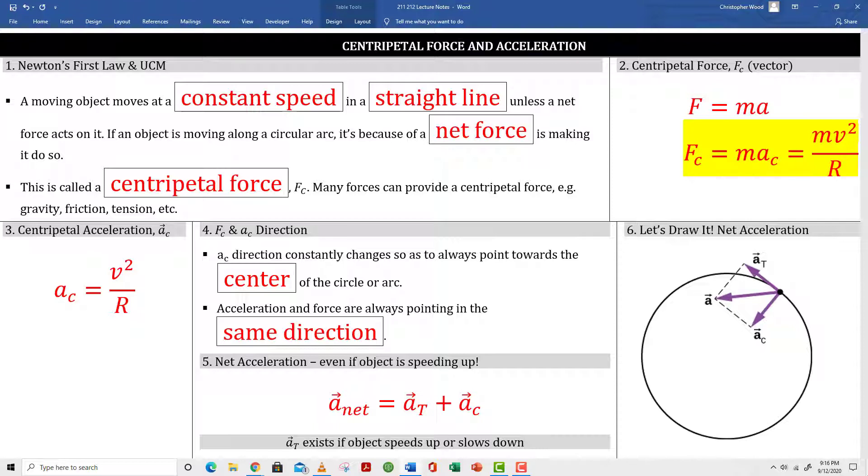Box number 4, the centripetal acceleration is a vector, so you have to worry about magnitude and direction, and its direction is constantly changing. As the object moves in a circle, its centripetal acceleration vector is constantly moving, so it always is pointing towards the center of the circle or the arc. As mentioned before, with Newton's second law, the direction of the acceleration vector and the force vector are always the same. That's useful to keep in mind. Box number 5 is saying, what if the speed of this object's circular motion is changing? What if it's speeding up or slowing down? In that case, we don't have uniform circular motion. We have accelerated circular motion. So, you see in box 6, there's my centripetal acceleration vector pointing towards the center of the circle. My circular motion is undergoing an acceleration as well, so I've added a tangential acceleration vector. Notice that vector is tangent to the circle. And my net acceleration vector is what I get after I do the vector addition between my centripetal and my tangential acceleration vectors.